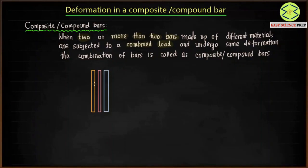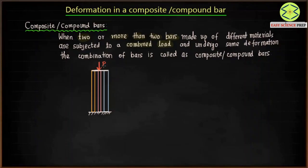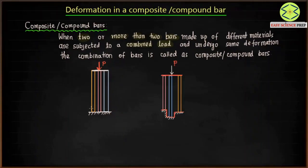In case one, we have three bars all having the same length. One end of the bars is fixed while the other ends are connected to each other, and a combined load is applied. Due to this load, all three bars will deform uniformly, so the deformation in bar one, bar two, and bar three are going to be the same.